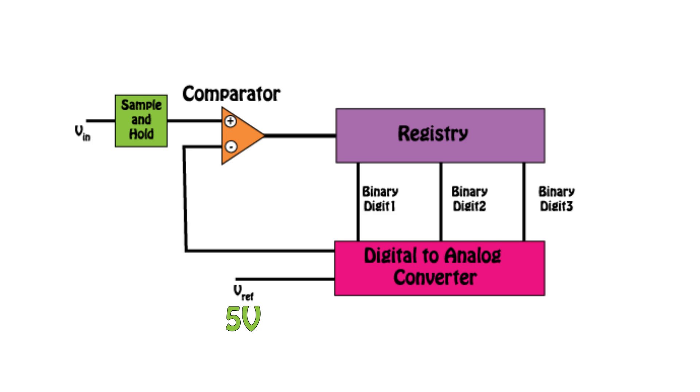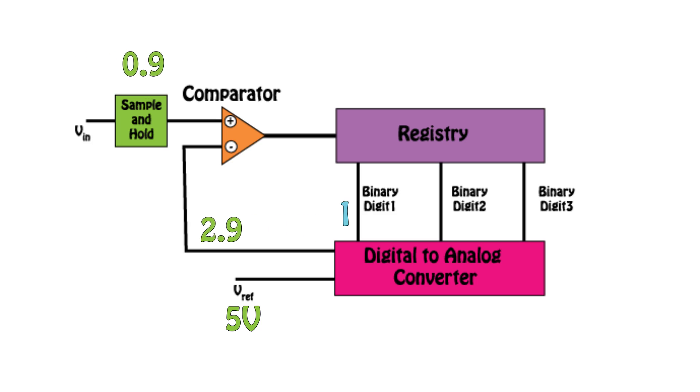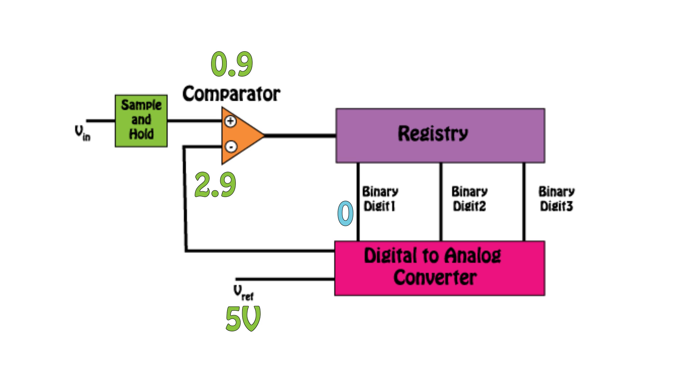How does this relate back to our guess and check? Let's look at our 3-bit converter again and say we have 5 volts maximum. This tells us that our MSB will be 2.9 volts, the next one will be 1.4, and the LSB will be 0.7. The first guess made is always a 1 in the MSB position. If the sampled analog signal is greater than 2.9 volts, then the MSB stays at 1 and the 2.9 is subtracted from the sampled voltage. If it is less than that, the MSB becomes 0, and then the full incoming voltage moves down the line to the next bit.